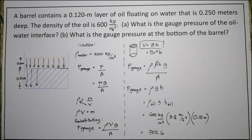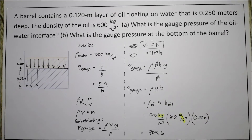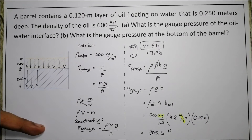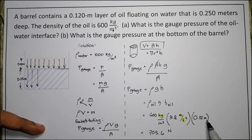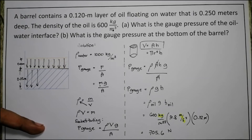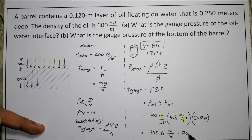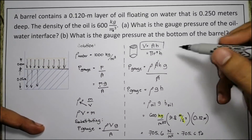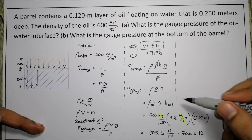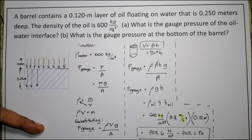It's important to be careful with units. Kilogram times meter per second squared is equivalent to Newtons. The meter cube in the denominator and the meter from the height cancel down, leaving meter squared. So the unit is Newtons per meter squared, which equals pascals. Therefore, the gauge pressure at the oil-water interface is 705.6 pascals — this is the answer for letter A.